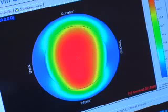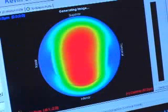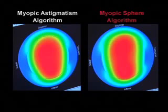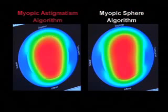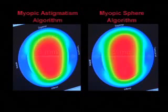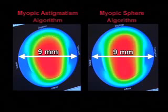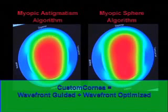Of note is the width of the red zone, which is the core part of the treatment. The reason this is important is because there are additional pulses being placed in the ablation pattern here, which make it wider, and that's going to counteract potential induced spherical aberration. Alternatively, the myopic sphere algorithm has a more narrow red area, reflecting fewer pulses in the periphery, so potentially there could be spherical aberration with the sphere algorithm. The myopic astigmatism algorithm's wider red zone places those additional pulses in the periphery to counteract potential induced spherical aberration. Both algorithms have a total ablation zone of 9.0 millimeters, but the key is what is happening inside that 9-millimeter zone, and that's where the two algorithms differ and why it's much more powerful to counteract spherical aberration.